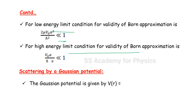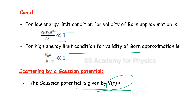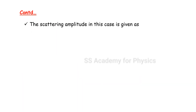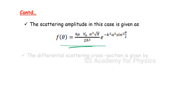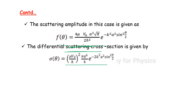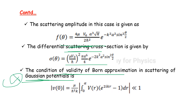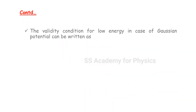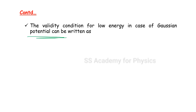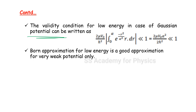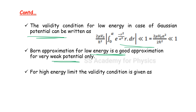Scattering by a Gaussian potential — this is very important. V(r) = −V₀ e^(−r²/a²). The scattering amplitude f(θ) is given, and then the differential scattering cross section formula follows. The validity condition for the Born approximation in Gaussian potential scattering: the modulus of the condition gives a specific formula. For low energy, it is a good approximation for very weak potential only.